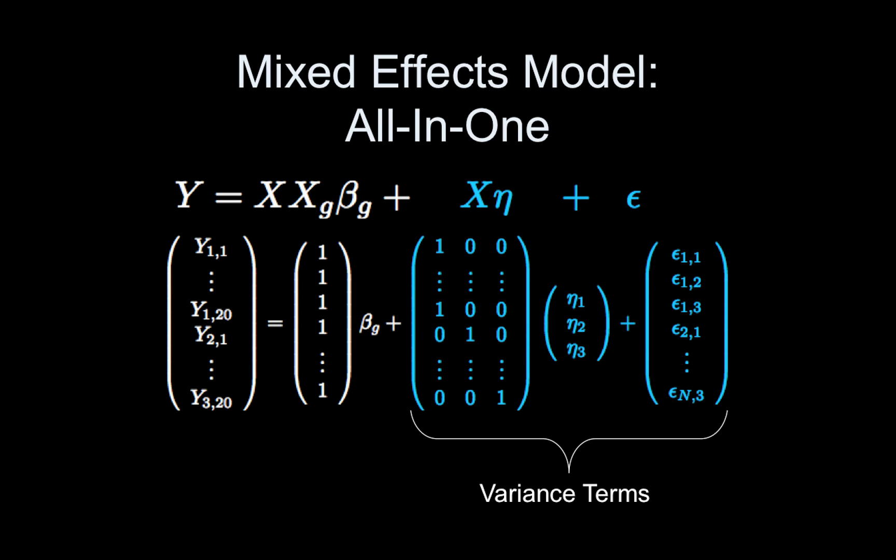It uses an iterative approach where it basically estimates beta_g, and it goes back and it estimates these variance terms, and then it goes back and re-estimates beta_g, and then it updates these variance estimates back and forth, back and forth. I'm not going to get into that, but that is the proper mixed model.